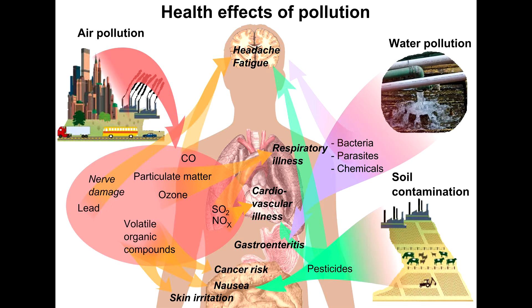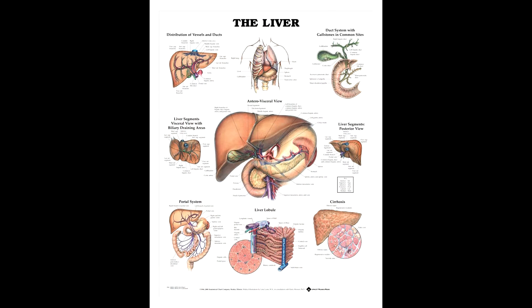Environmental toxins accumulate in the tissues. The body will attempt to remove the toxins from the system by processing them through the liver and dumping them into the gut, where they should be removed via the stool.